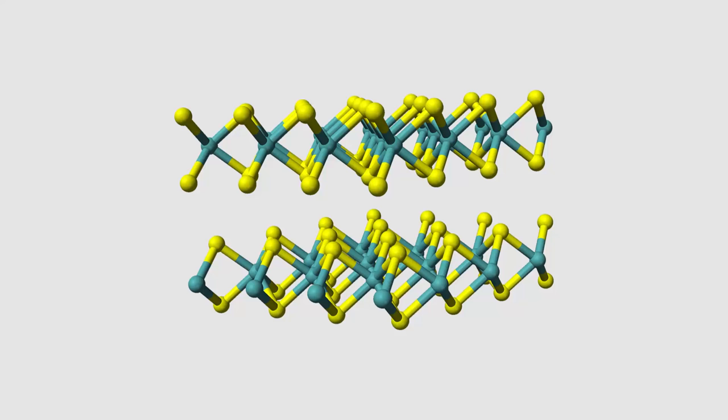Seen from above, WSe2 has the same hexagonal structure as graphene. However, from the side, we can see that it actually has some of its bonds out of plane, forming a trigonal prismatic structure. Because of this,